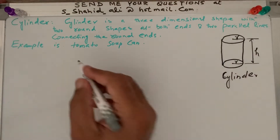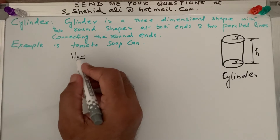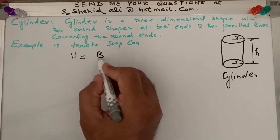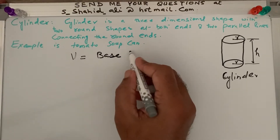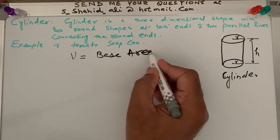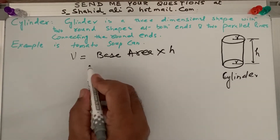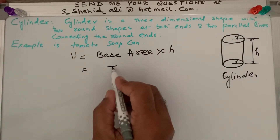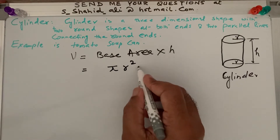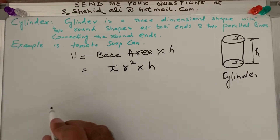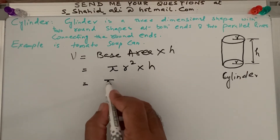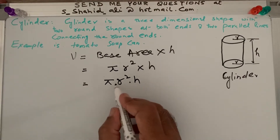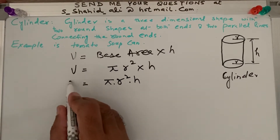This is my cylinder where I have defined the height and the radius. The volume of the cylinder is equal to base area times height. The base area means the circular area, which is pi r squared. So, volume of a cylinder equals pi r squared times h.